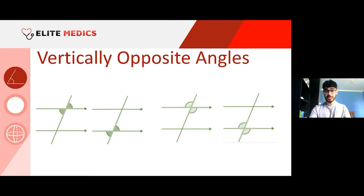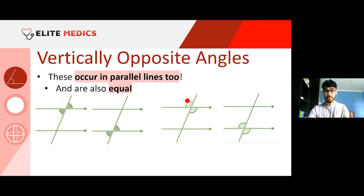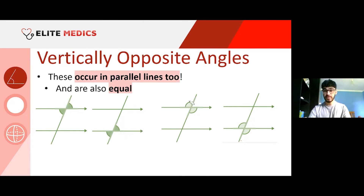Vertically opposite angles occur in parallel lines too, and as established, all vertically opposite angles are equal. To move between different cases we use the 180-degree rule. You just need to be confident using the angles — not necessarily in proving how to get from one angle rule to the other.